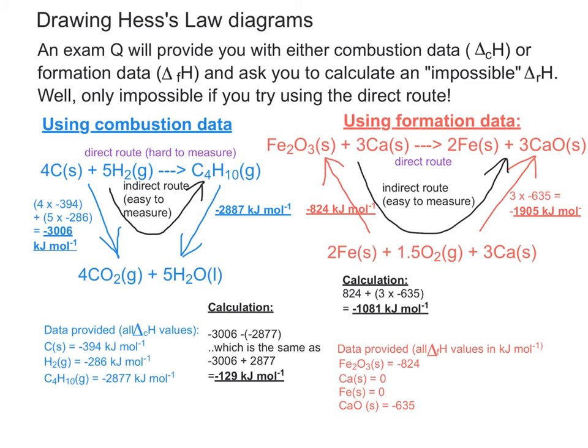So starting from Fe2O3 plus 3Ca, I've flipped the sign of minus 824 and turned it into positive 824 because I'm going against the direction of the red arrow. Following the direction round on my black arrow I'm now going from 2Fe to 1.5O2 and 3CAs back up again to the top right-hand corner which is 2Fe and 3CaO. This time I'm going in the same direction as the red arrow pointing up, so I keep my minus sign, so it's 824 plus 3 lots of minus 635 gives us minus 1081 kilojoules per mole.